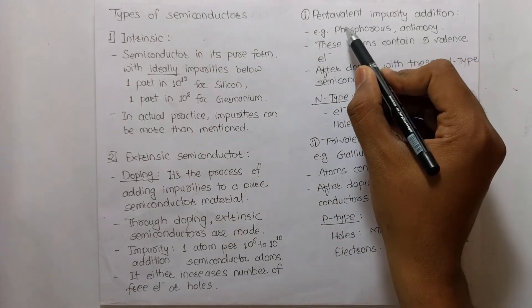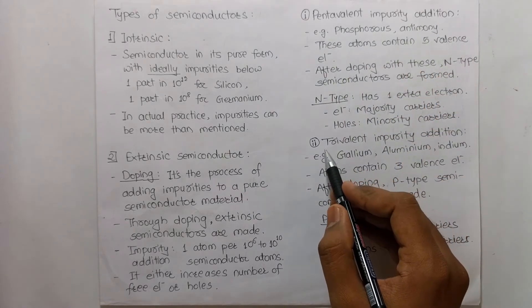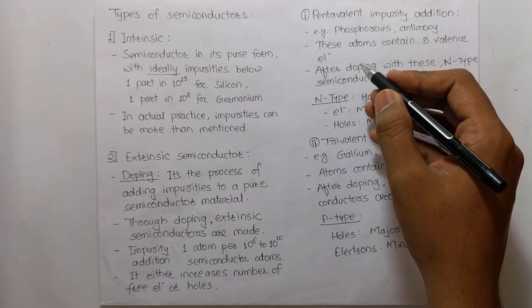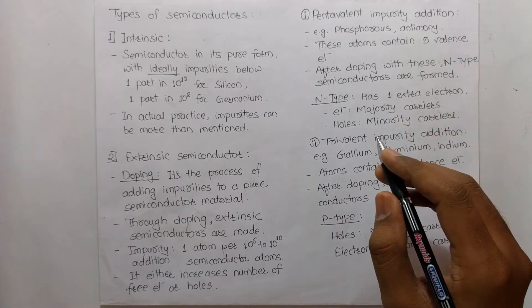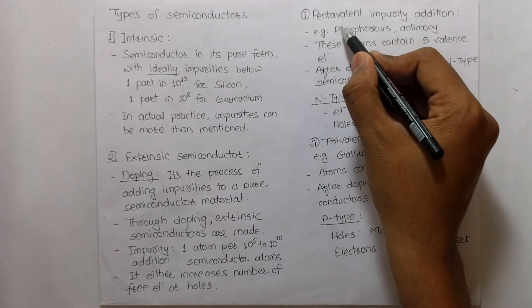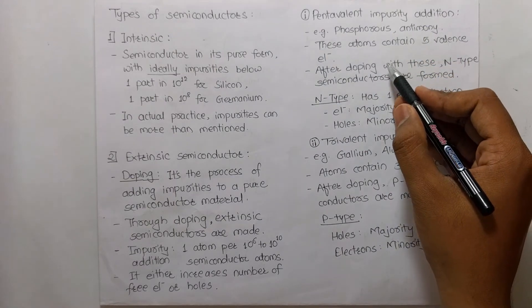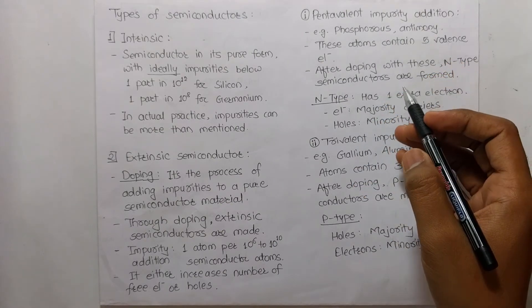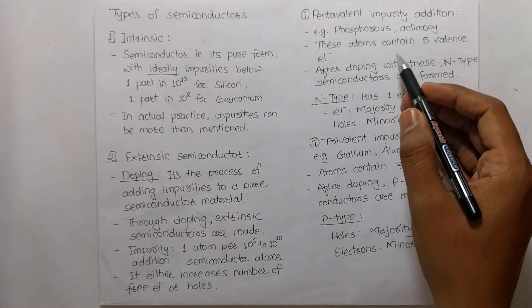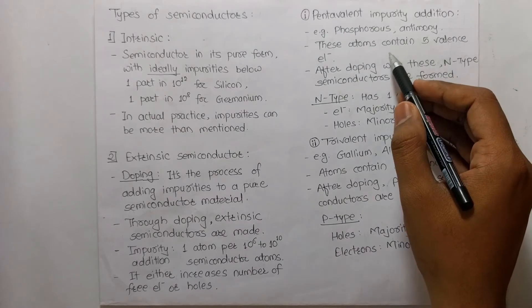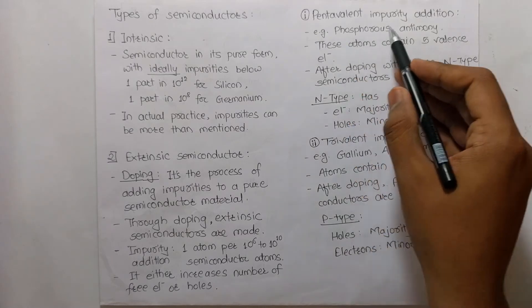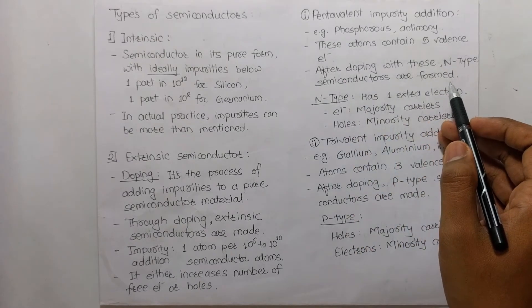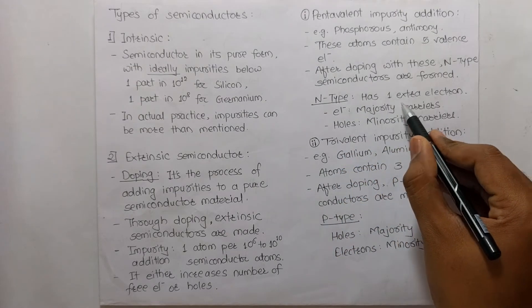There are two types of impurities: pentavalent and trivalent. Silicon and germanium have 4 electrons in their outer shells. When pentavalent impurities are added, silicon needs 4 more electrons for stability — but the pentavalent impurity provides 5, leaving 1 extra electron after bonding. After doping with pentavalent impurities, N-type semiconductors are formed, which have 1 extra electron.